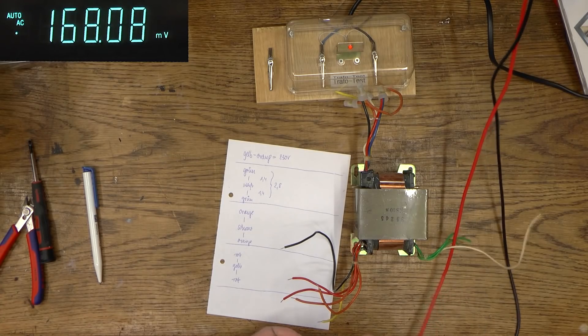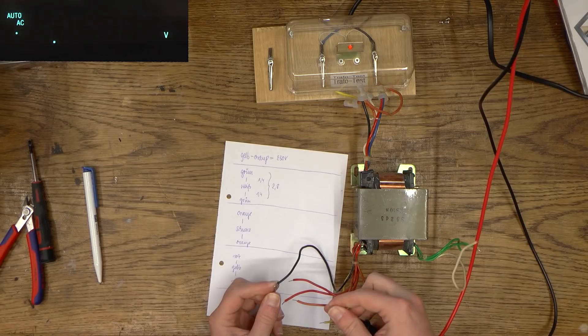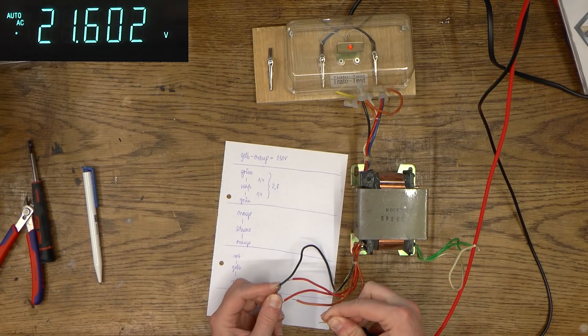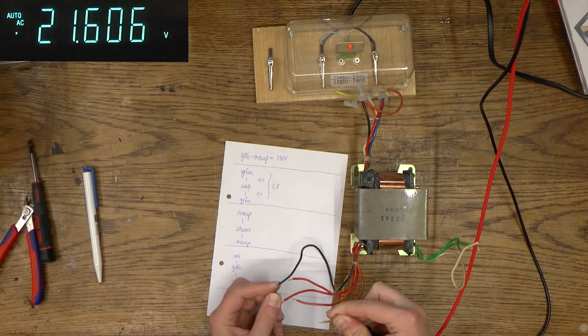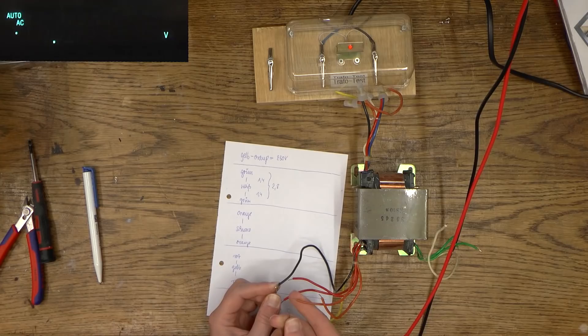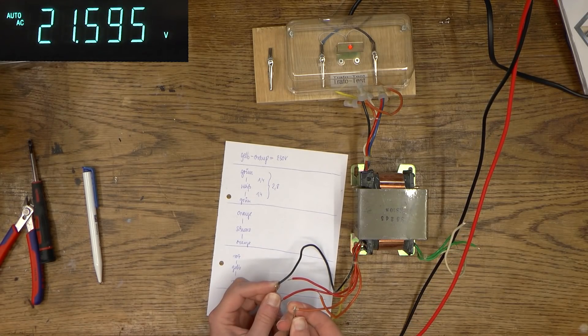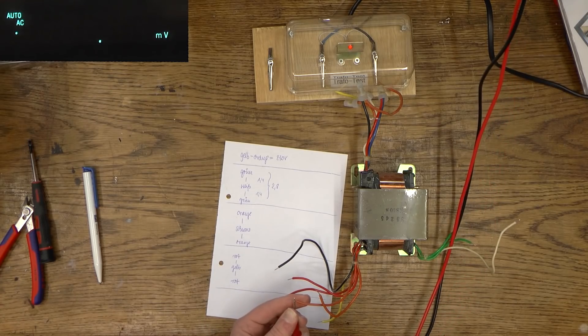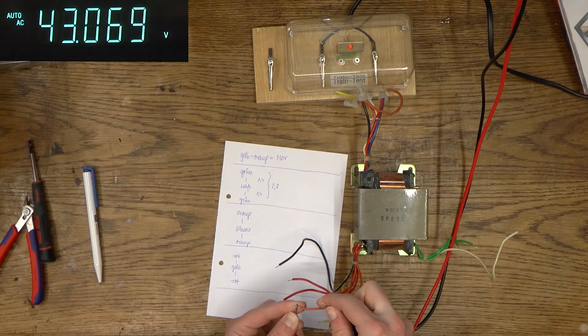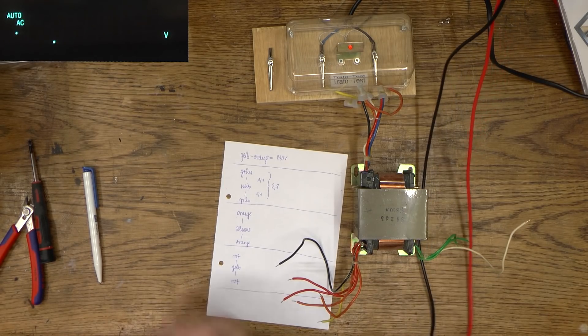Now let's try black and orange. And we have 21 volts. That's nice. 21. Let's try the other orange. Black and orange. 21. And from orange to orange. We have 43 volts. So that's 21 and 43.